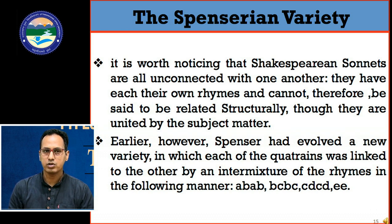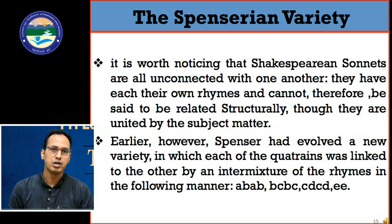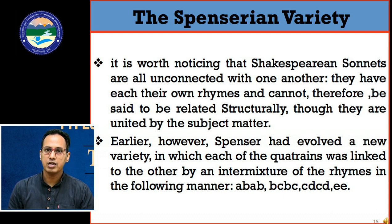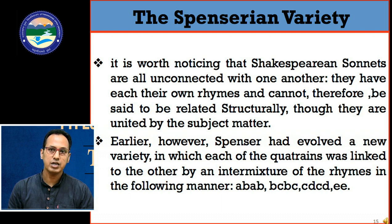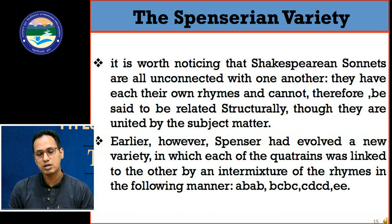It is worth noticing that Shakespearean sonnets are all unconnected with one another — each has its own rhymes and cannot be said to be related structurally, though they are united by subject matter. But Spenser evolved a new variety in which each quatrain is linked to the other by an intermixture of rhymes. Suppose the first quatrain is ABAB; the fifth line will start from the last rhyme of the fourth line. So if ABAB is the first quatrain, the next quatrain will be BCBC.